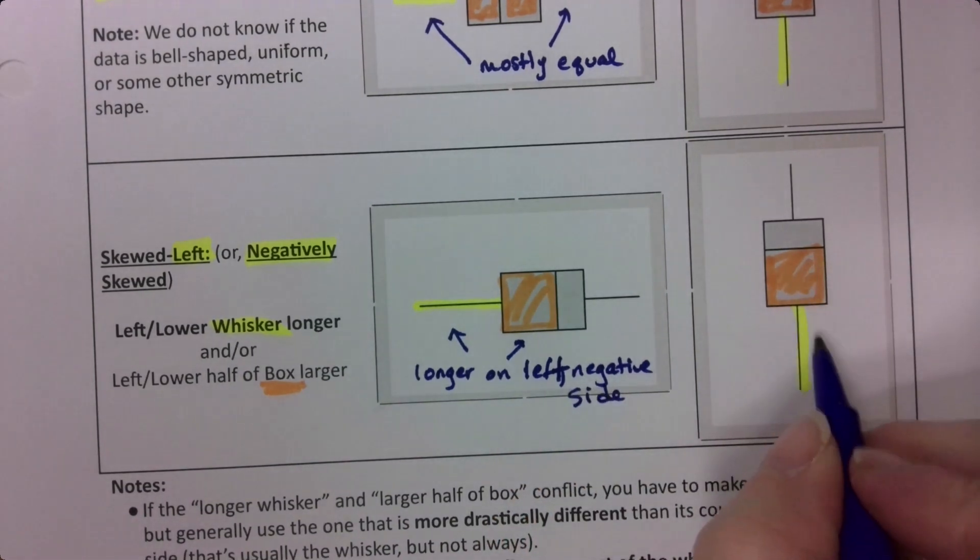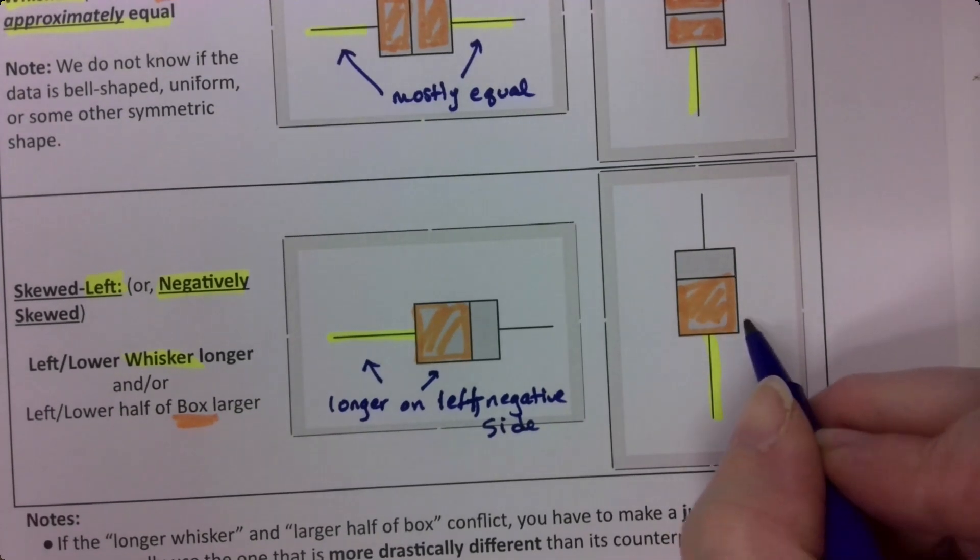Same thing over here. This is longer on the negative side. This is low. Longer on the low side.